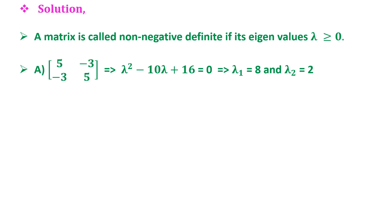Now for matrix A, the characteristic equation is λ² - 10λ + 16 = 0, which implies that λ₁ = 8 and λ₂ = 2. Easy to factorize, and both are greater than or equal to 0, so option A is correct.